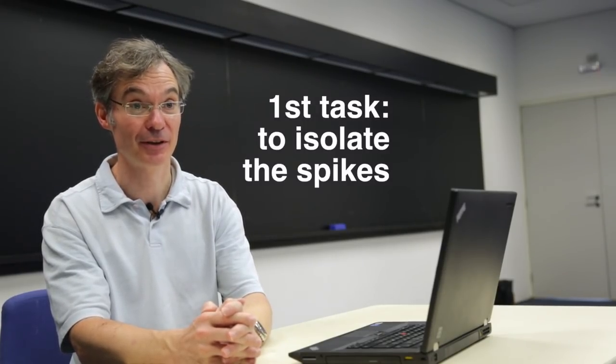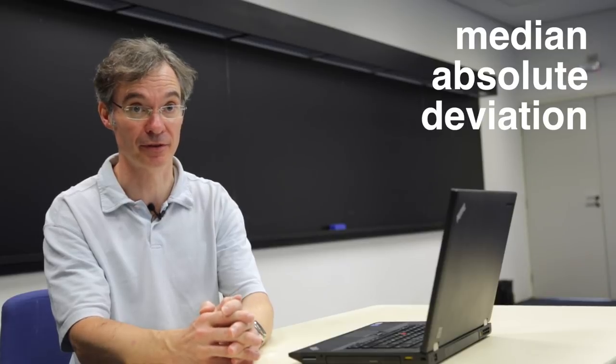Our first task is to isolate the spikes. In order to do that automatically, we have to characterize our background noise. In order to characterize our background noise in the presence of spikes, we rely on the median absolute deviation of robust statistics.